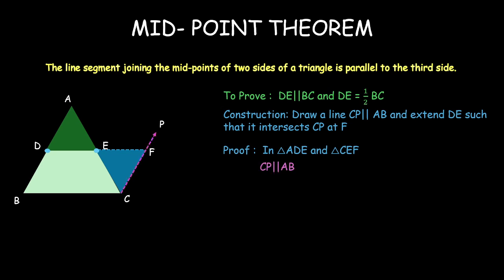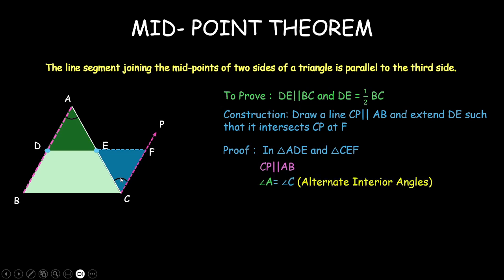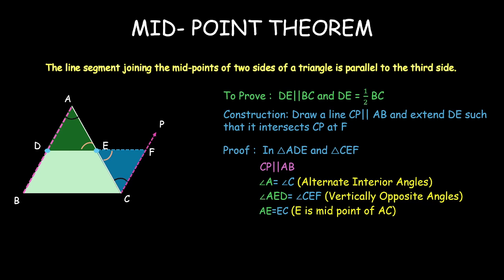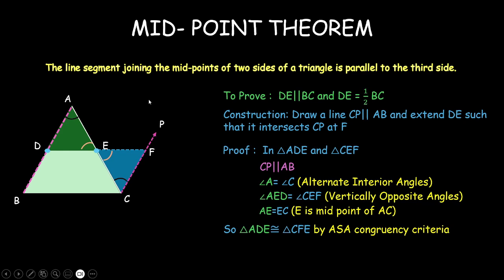Since CP is parallel to AB, as we constructed it, and AC is the transversal, this makes a Z shape, which gives us that angle A of the green triangle and angle C of the blue triangle are equal because they form alternate interior angles. And angle DEA will be equal to angle CEF because they are vertically opposite angles. We already have AE equal to EC, since E is the midpoint of AC. So these two triangles are congruent by the ASA criteria.